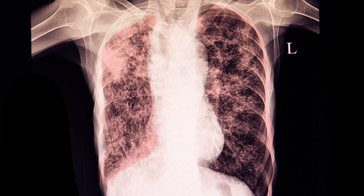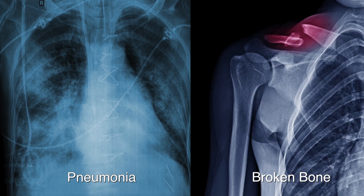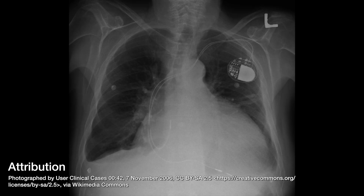Another thing we can see on an x-ray is tuberculosis — from the word tubercles — where you see little black holes on the image. Beyond that, we can also see emphysema, pneumonia, fractures, and broken bones. If you're in the healthcare field, you can look out for a pneumothorax or an enlarged heart — pretty basic stuff that gives you a gist of what's going on with the patient.